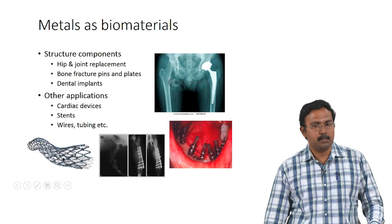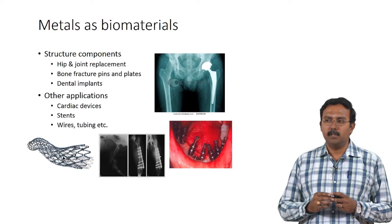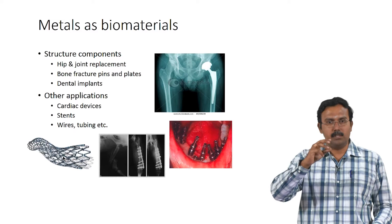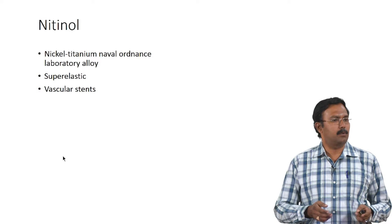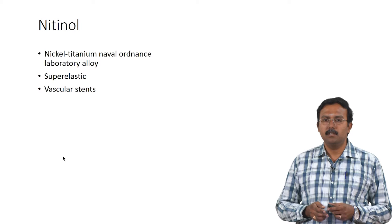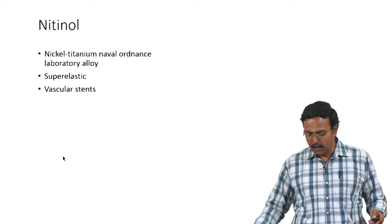This is how a stent looks — it is used to make sure blood vessels do not collapse. In angioplasty a stent is placed to keep the blood vessel open. Nitinol is one alloy which is quite popular. This is a super-elastic material used in vascular stents. Does anybody know what nitinol is?